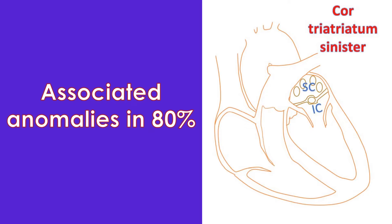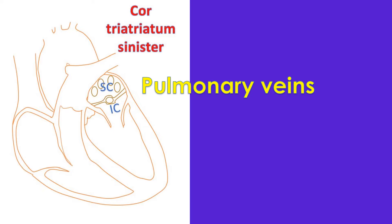Cor triatriatum sinistrum is often associated with other cardiac malformations in up to 80% of cases. Secundum atrial septal defect and anomalous pulmonary venous connection are the most commonly associated anomalies. The superior chamber receives the pulmonary veins and the inferior chamber is connected to the atrioventricular valve. The inferior chamber has the atrial appendage and true interatrial septum, hence it is a true atrium.